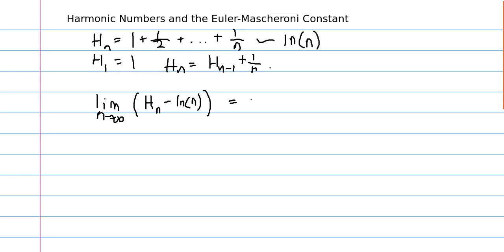And this limit is equal to a number which we call gamma, which is the Euler-Mascheroni constant, and it is approximately 0.577.